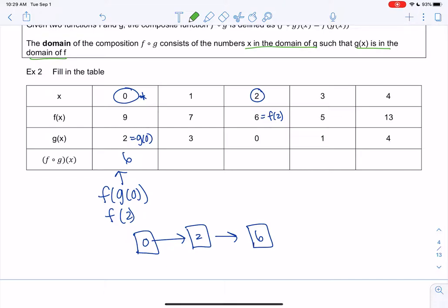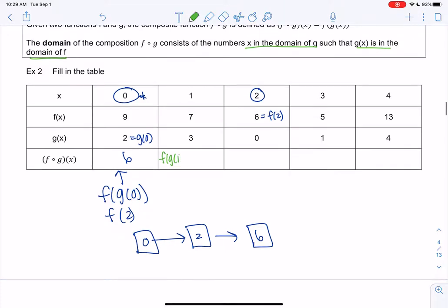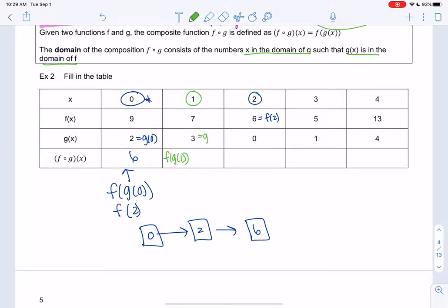So the next one is saying f of g of 1. My parentheses look like 1s. So we're going to go to 1 and find g of 1 which is 3. And then we find f of 3. So basically we input 1, we output 3, but we're going to put 3 back in and we're going to output 5 because the second row is f.